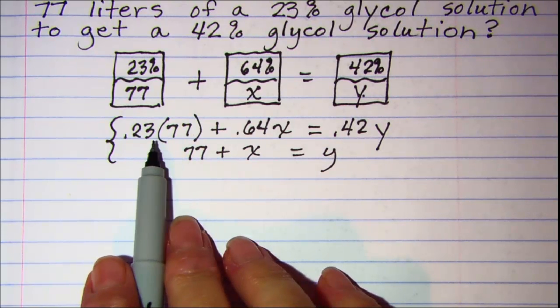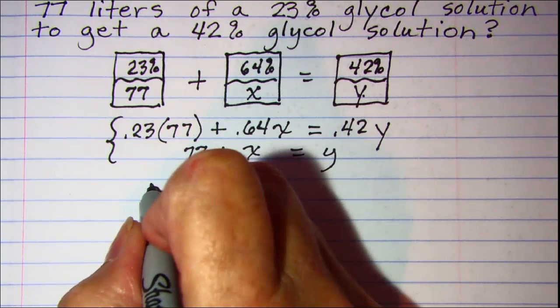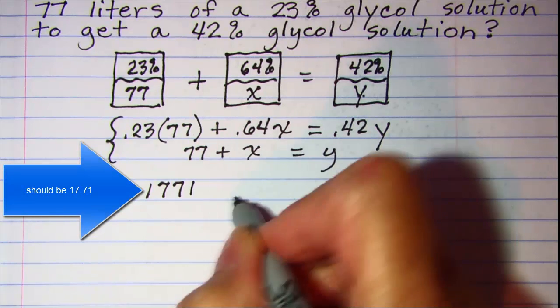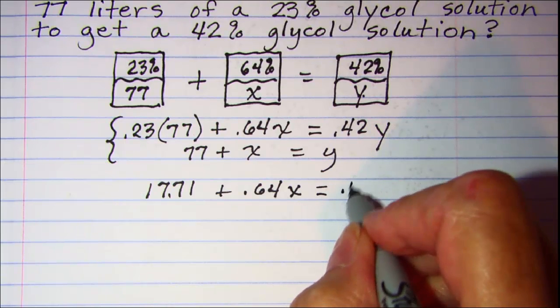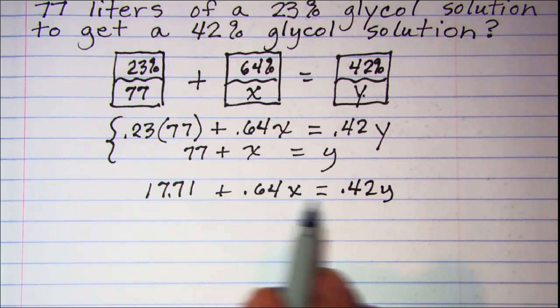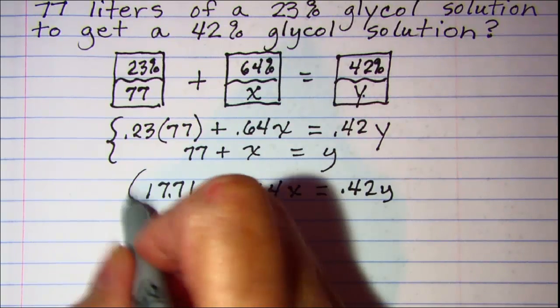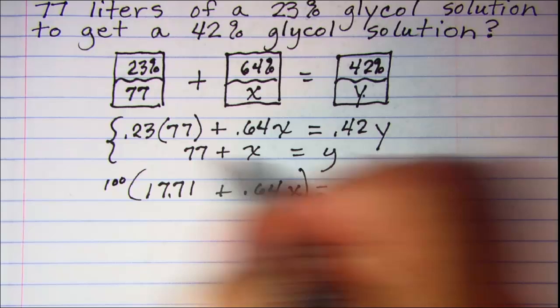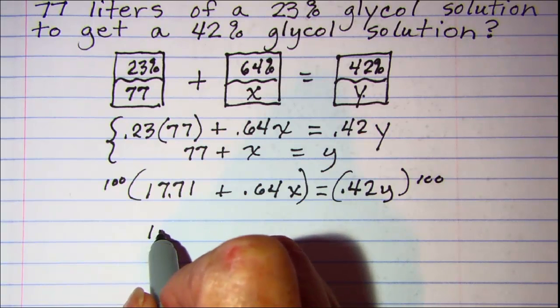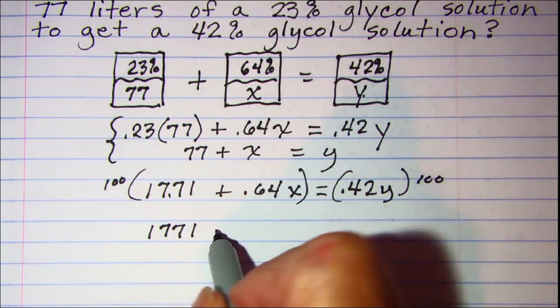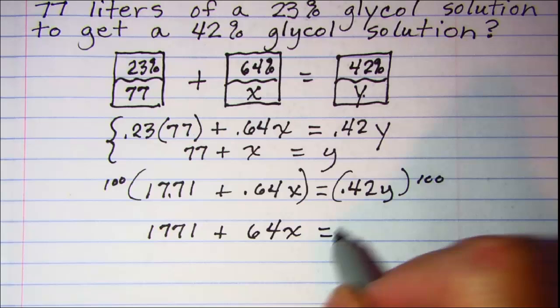Let me do the arithmetic here. .23 times 77 is 1771 and I'll copy the rest of it. Now let me multiply through by a hundred on both sides of the equation to get these decimals off of here. So I'll multiply this side by a hundred and this side by a hundred and now I have 1771 plus and this would become 64x equals 42y.